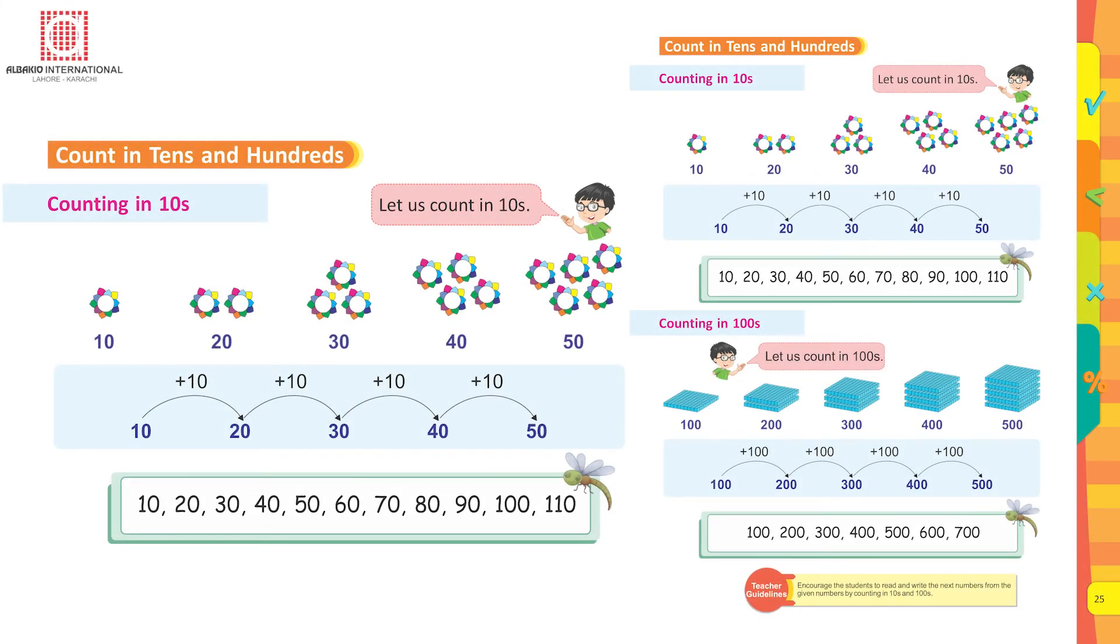Count in tens and hundreds. Counting in tens: 10 plus 10 equals 20, 20 plus 10 equals 30, 30 plus 10 equals 40, 40 plus 10 equals 50.